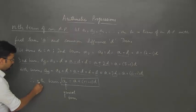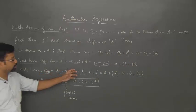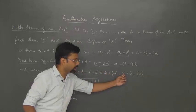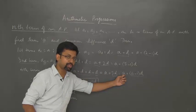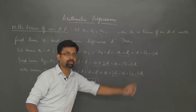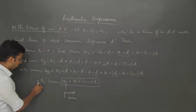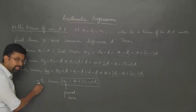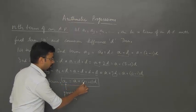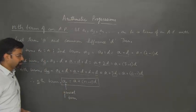Why? Because if we use the fourth term, a4 is equal to a — which is the first term — plus (4 minus 1) times d. So similarly, if we are writing the nth term, it will be an equal to a plus (n minus 1) times d.